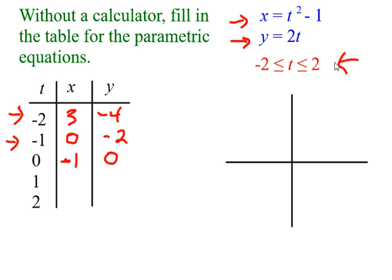When t is 1, I will be getting 0 for x and 2 for y. And when t is 2, 4 minus 1 is 3. I'm back at 3 for x. And then for y, I get 2 times 2, which is 4.